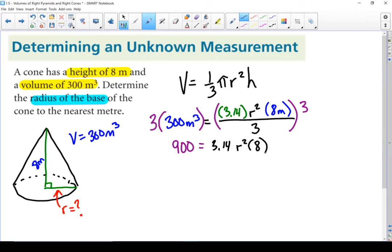Let's take 3.14 times 8. That leaves me with 25.12 times R squared. Divide both sides by 25.12. I end up with 35.83 equals R squared.